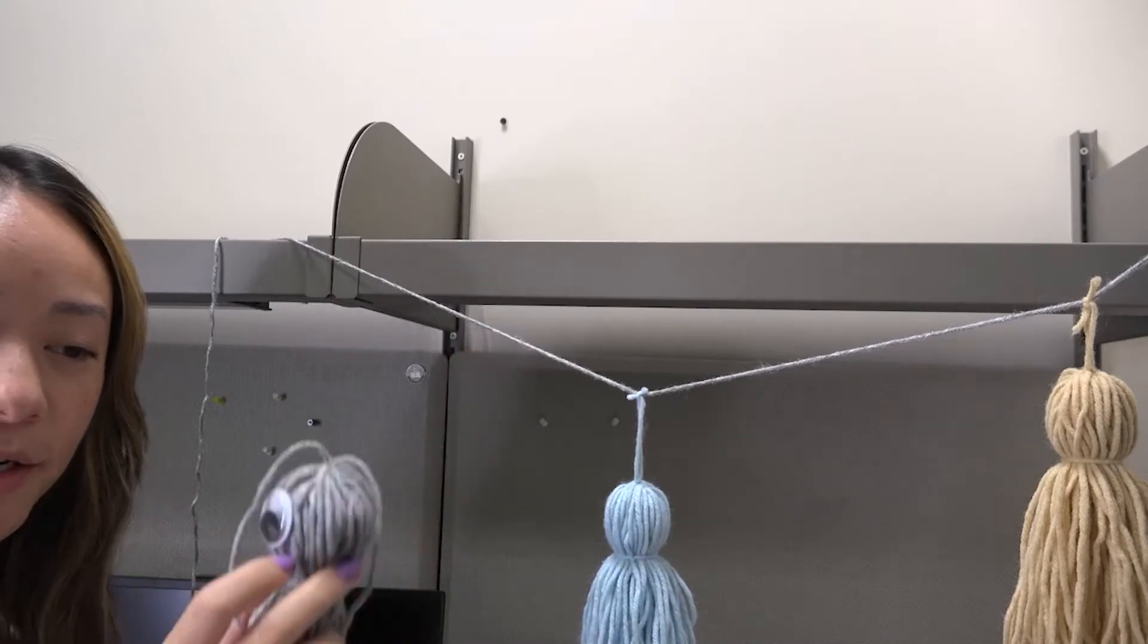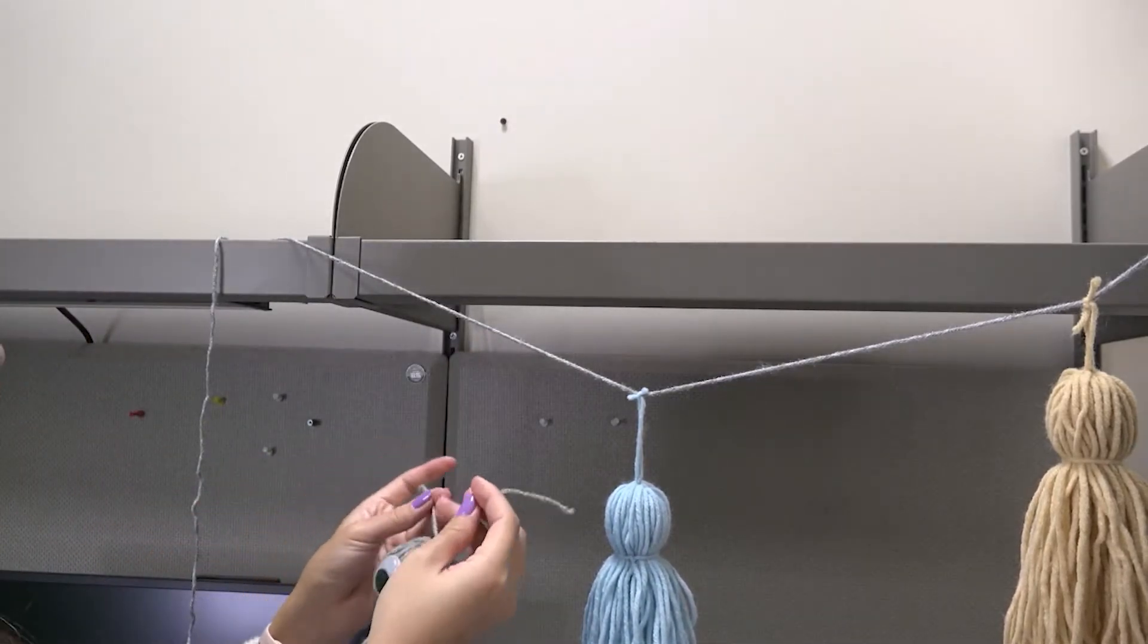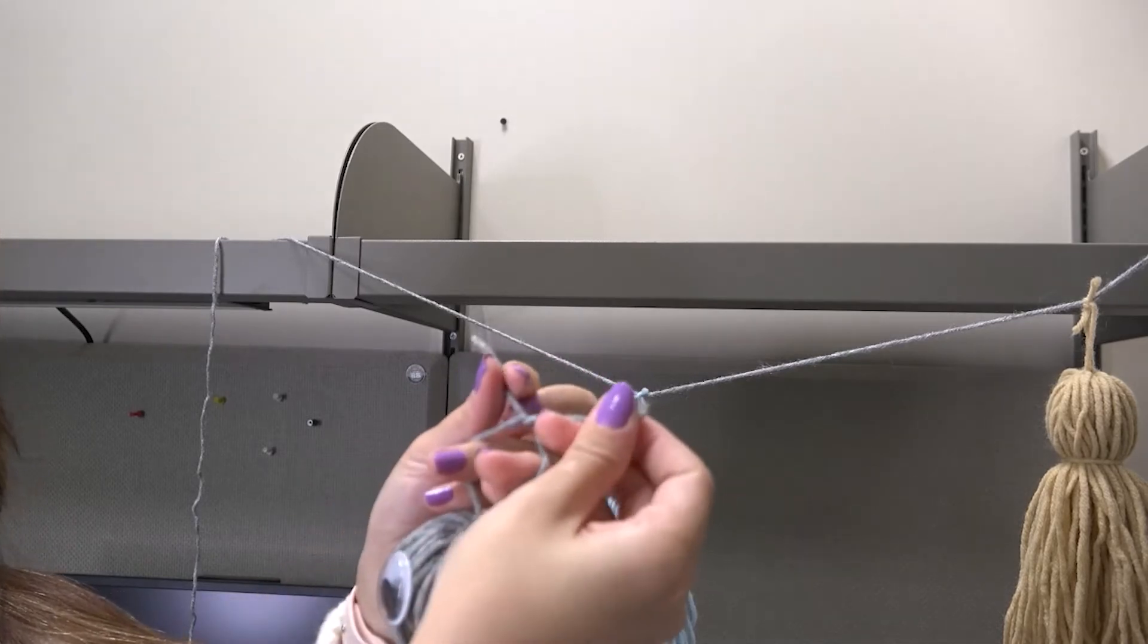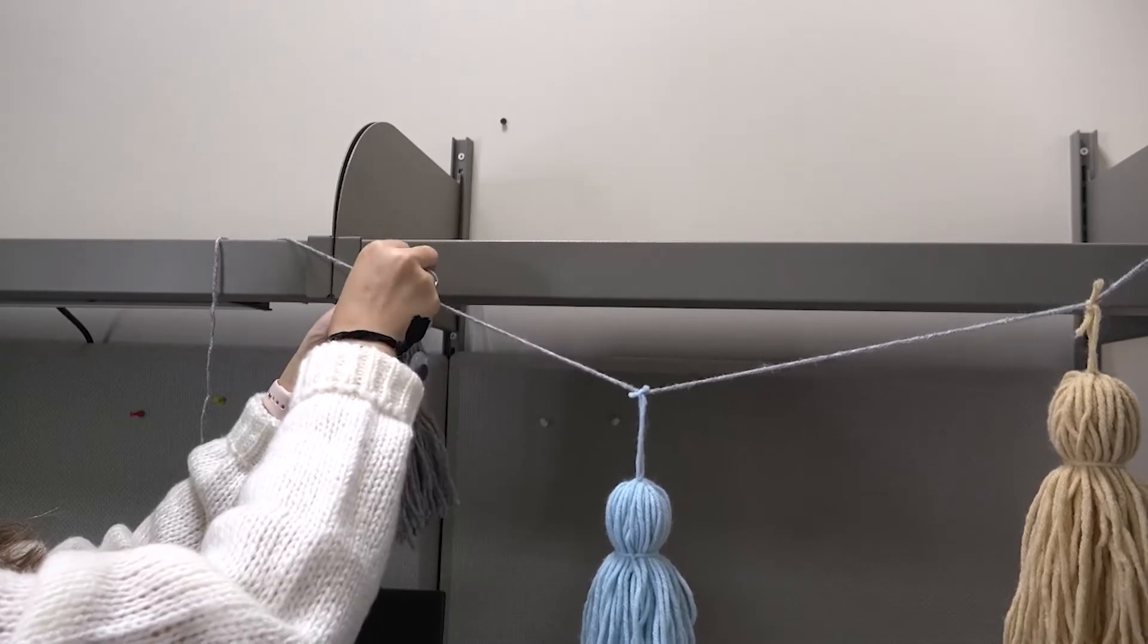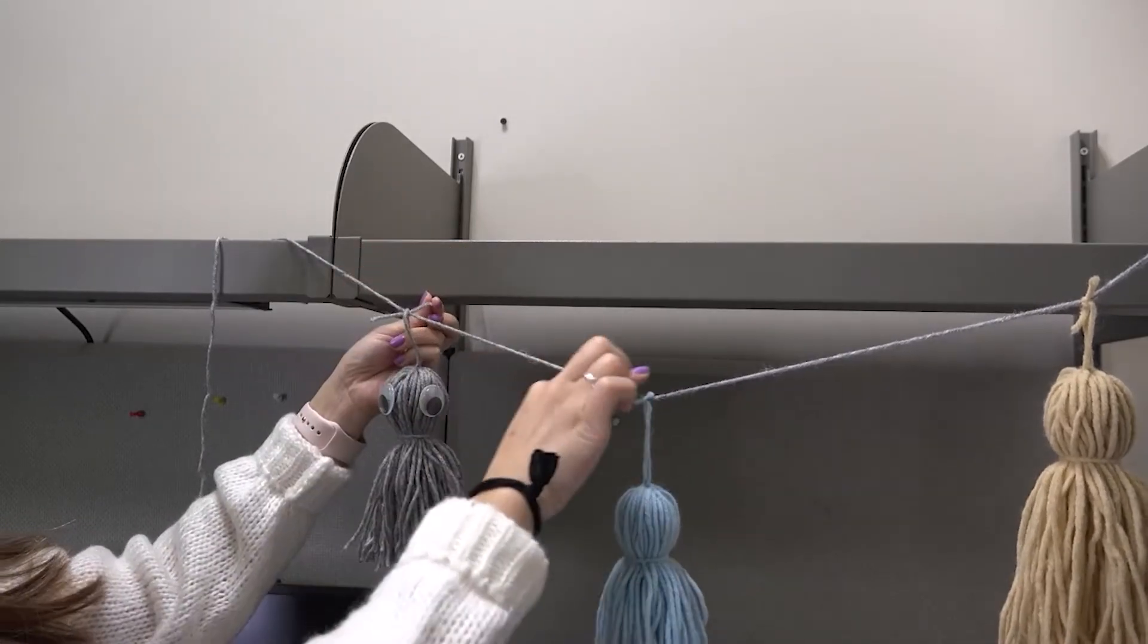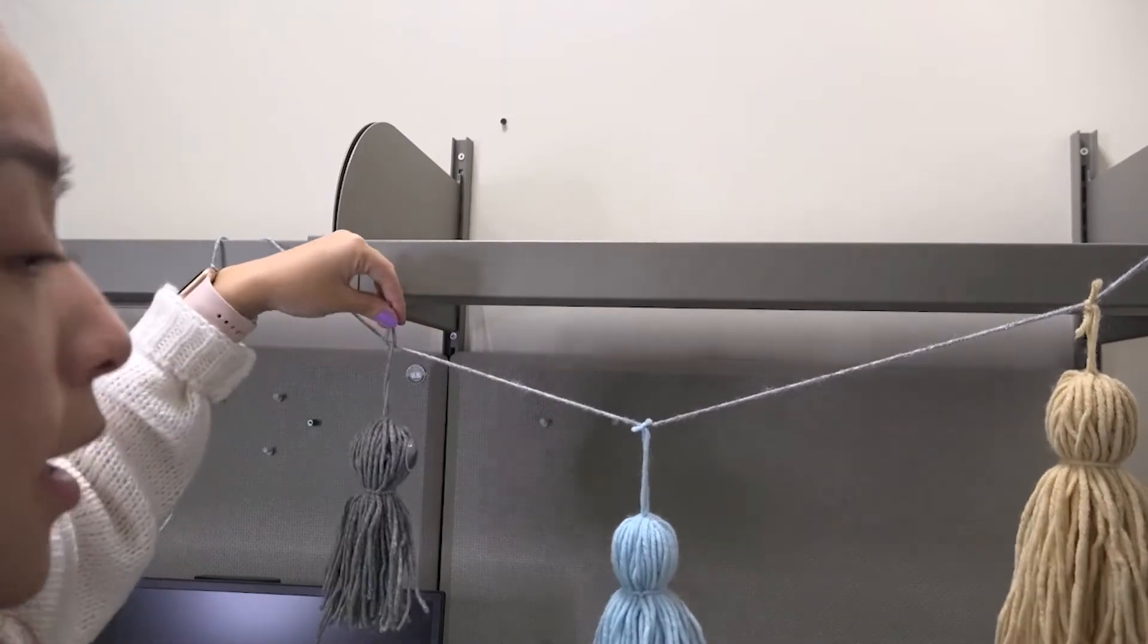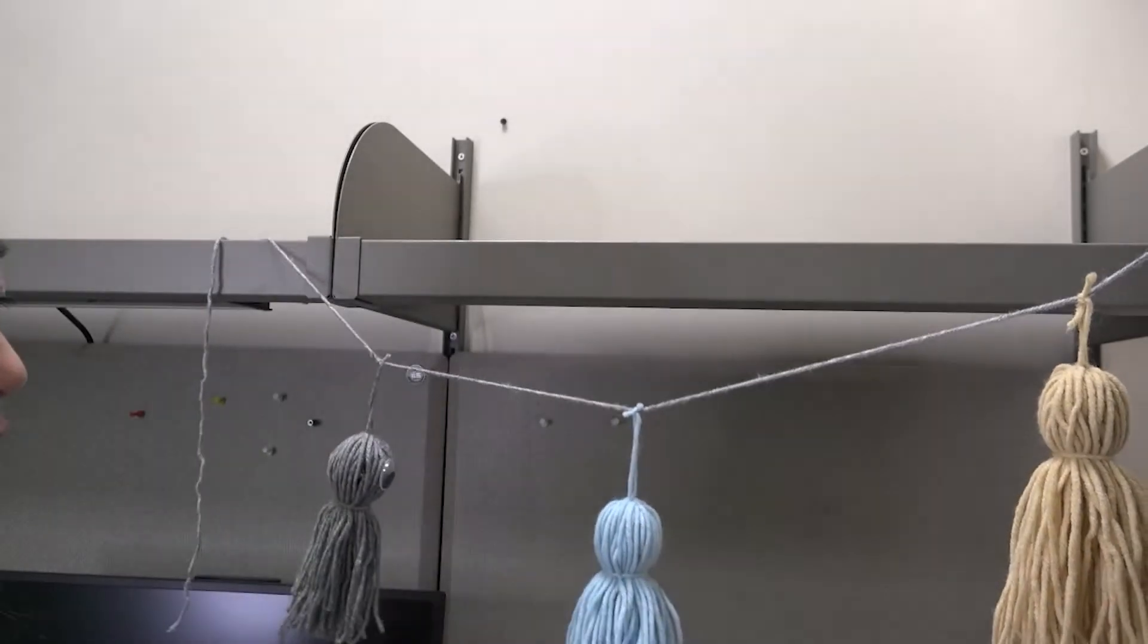So you're going to grab your little ghost. You're going to tie it once. At least this is how I hang it. So you're going to tie it once. After you tie it once, you want to tie it again when the string is through it. So it kind of hangs like that. And then you can cut off the little end piece. Just like that.